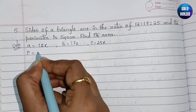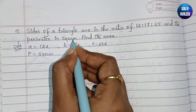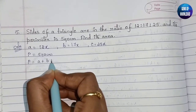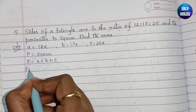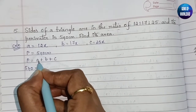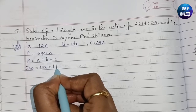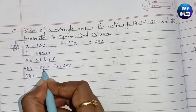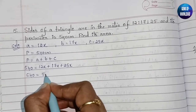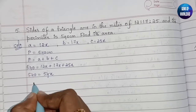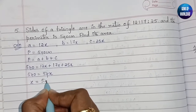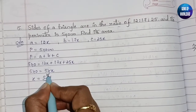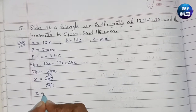The perimeter is given as 540 centimeter. So perimeter equals a plus b plus c gives 540 equals 12x plus 17x plus 25x, which is 54x. Therefore x equals 540 divided by 54, which equals 10.